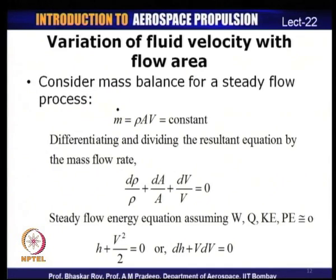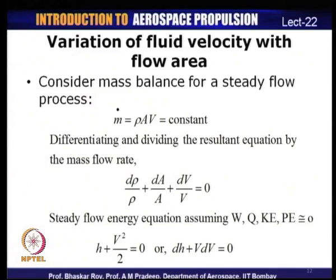From the steady flow energy equation, assuming work, heat transfer, and potential energy are zero: H + V²/2 = constant, so dH + V dV = 0. From the Gibbs equation T dS = dH − V dP, for isentropic flow (T dS = 0): dH = dP/ρ. Therefore our energy equation becomes dP/ρ + V dV = 0.